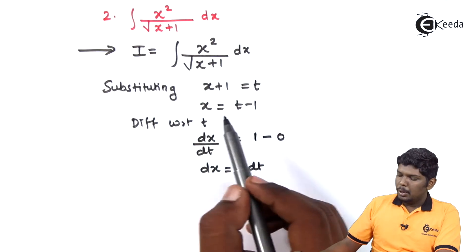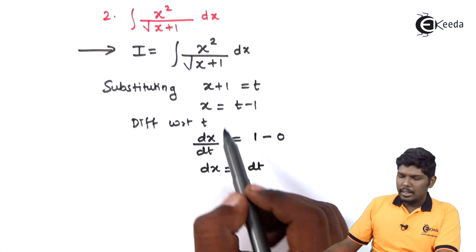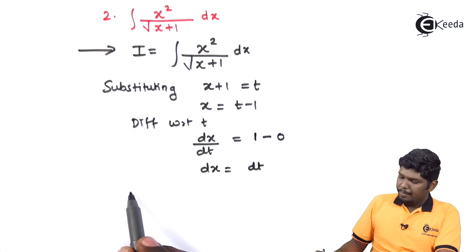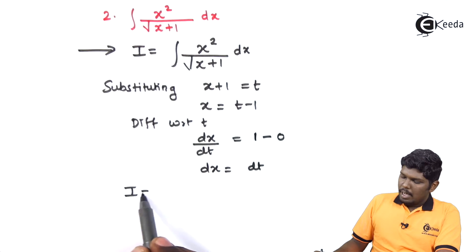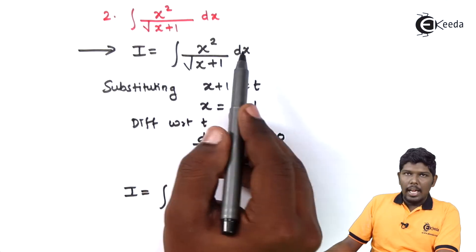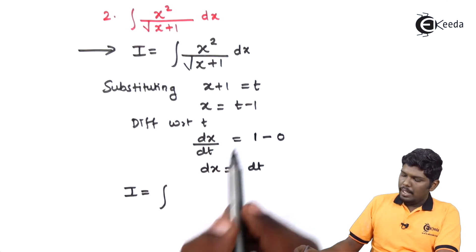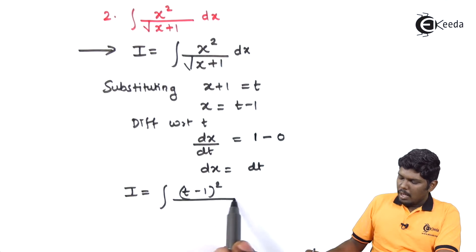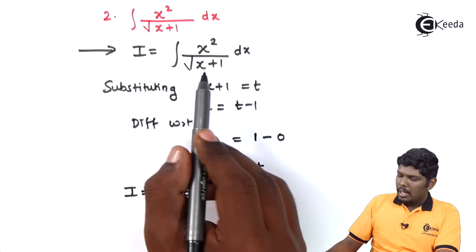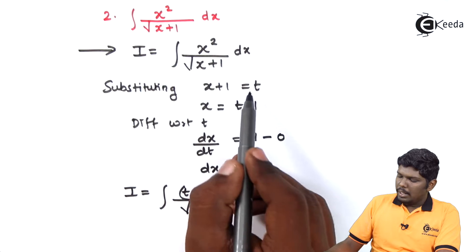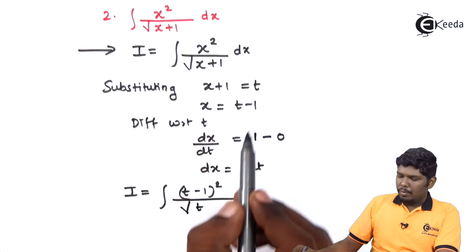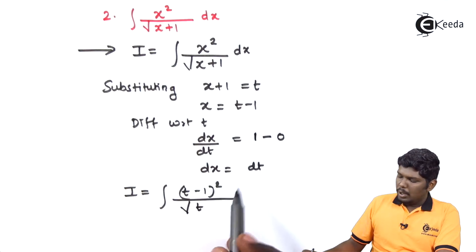Now let us substitute the values of x and dx in the given integral i. i is equal to x squared, which becomes t minus 1 whole squared, upon under root of x plus 1 equal to t, and dx equals dt.